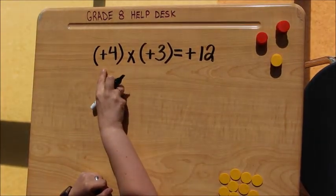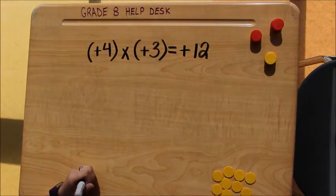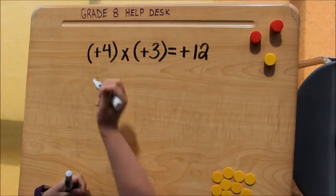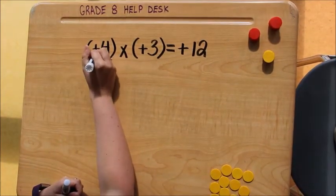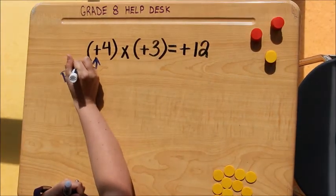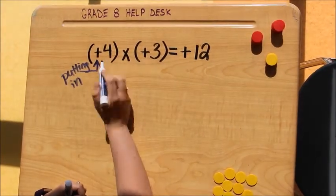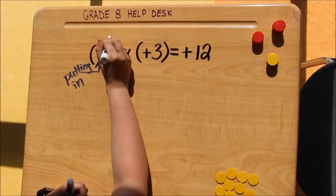So I'm going to start off by looking at my sign. I have a positive number here, so that means I'm going to be putting something into my bank. So I'm putting in, and this four tells me I'm going to be putting in four groups.